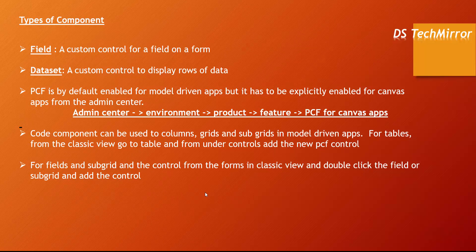For requirements like modifying a calendar control or a text box control, you create a field component. For a dataset component — a custom control to display rows of data — for example if I want to create my own custom grid using a control from Microsoft Fluent UI to display data, I use a dataset component. For field components I can also use Microsoft Fluent UI controls. This is a major advantage since Microsoft puts a lot of emphasis on Fluent UI for seamless integration across M365.